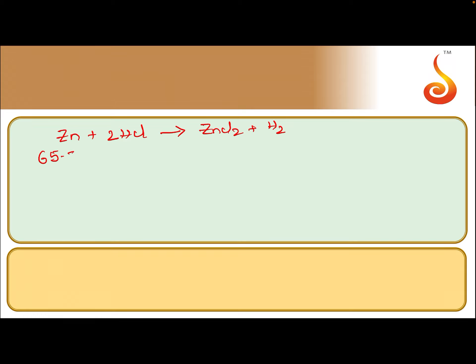65.5 is the molar mass of zinc. HCl is 36.5. So 2 into 36.5. So 65.5 grams reacts with 2 into 36.5 grams of HCl.